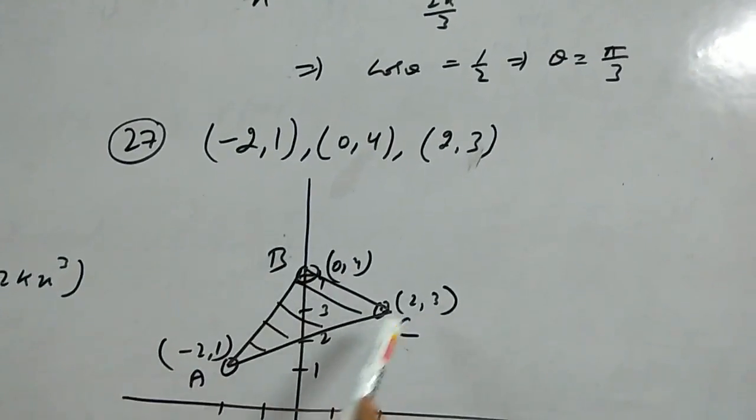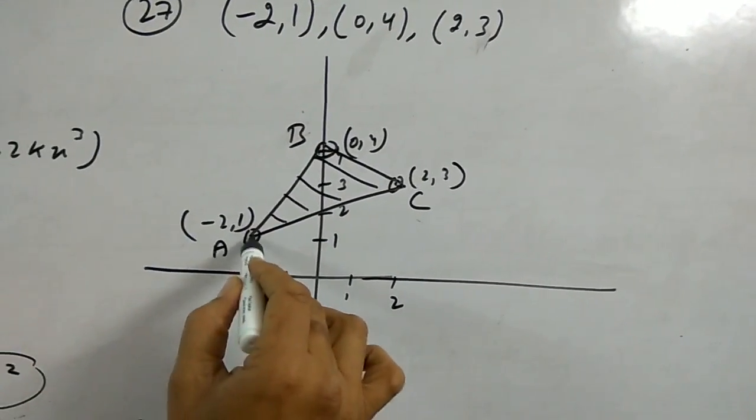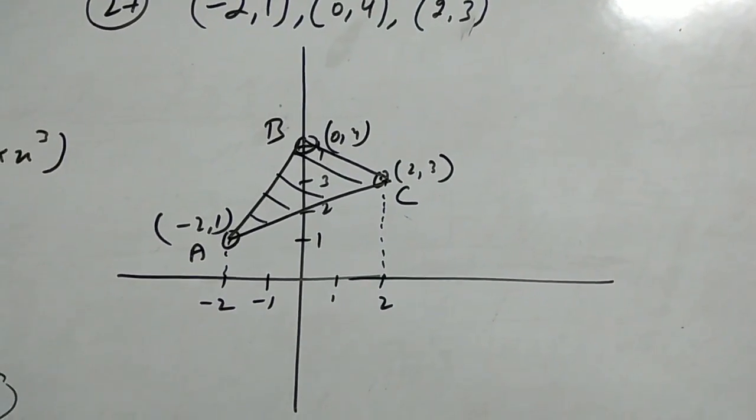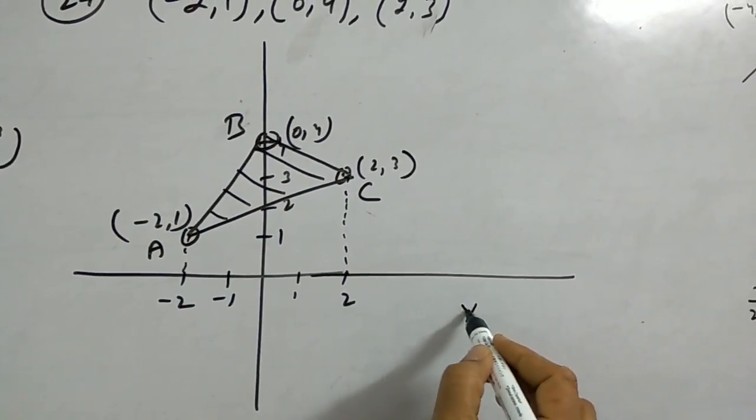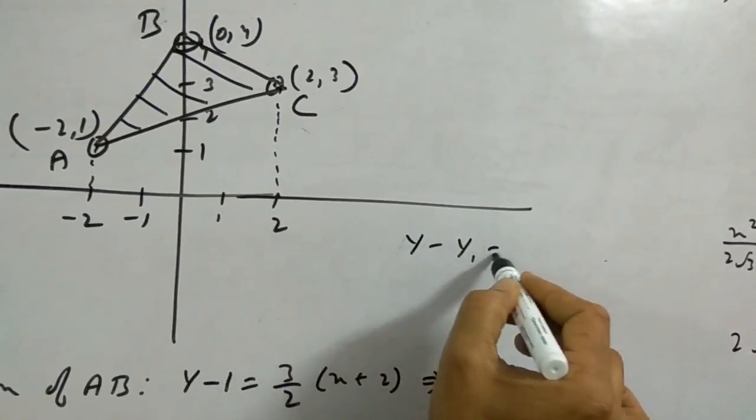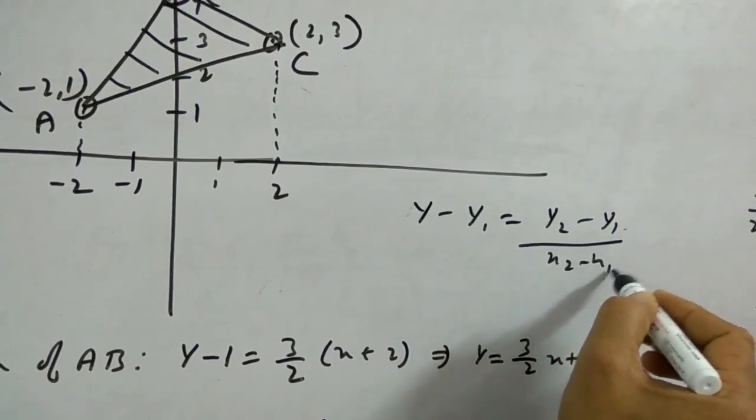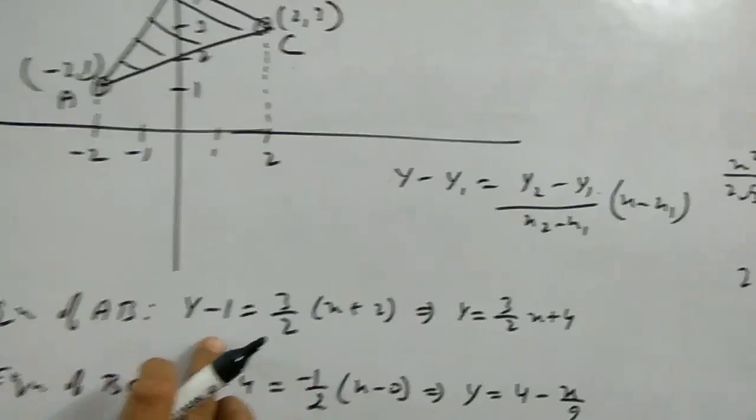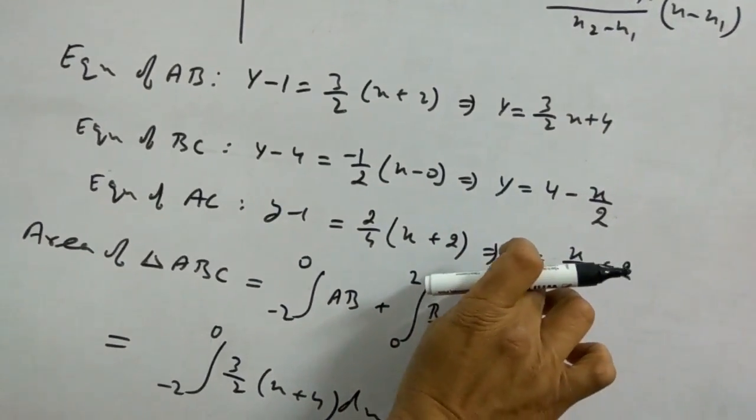You will plot the triangle and find the shaded area. The points are at minus 1, 0, and 2. We need the equation of AB, BC, and AC. Use the formula: y minus y1 equals (y2 minus y1) upon (x2 minus x1) times (x minus x1). Find equations in terms of y.